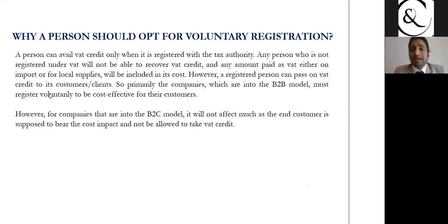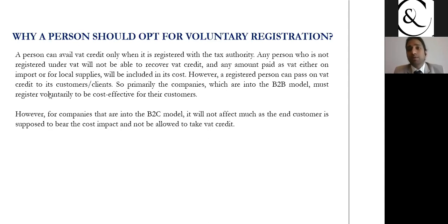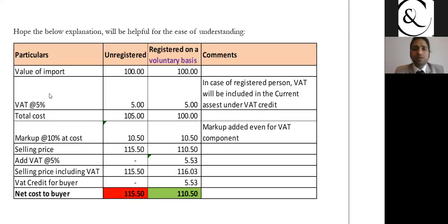Registered suppliers can pass on VAT credit to their customers, whereas unregistered suppliers cannot — making their supplies more expensive. For example, importing a product for 100 rials: the unregistered company's total cost becomes 105, while the voluntarily registered company's cost remains 100 because the 5 rials paid as VAT is classified as a VAT input, which is a current asset.